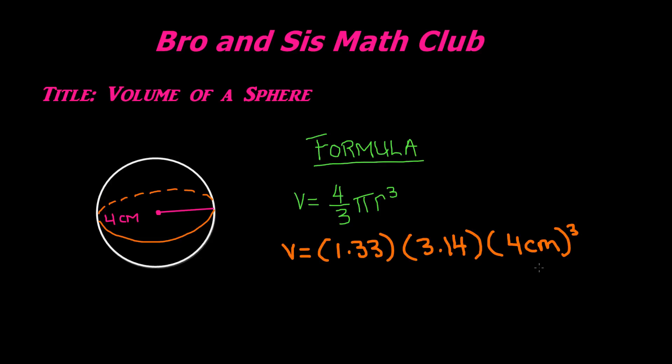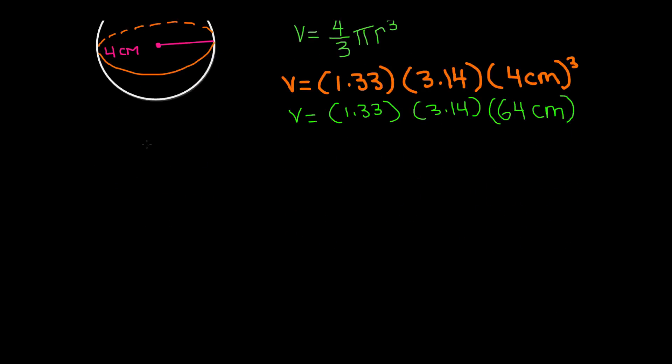4 centimeters cubed is the same thing as saying 4 times 4 times 4, which gives us 64 centimeters. So let's go ahead and write: volume equals 1.33 times 3.14 times 64 centimeters. Now we have to multiply all of these three to find the volume. So let's go ahead and do the multiplication. First, multiply 1.33 by 3.14.